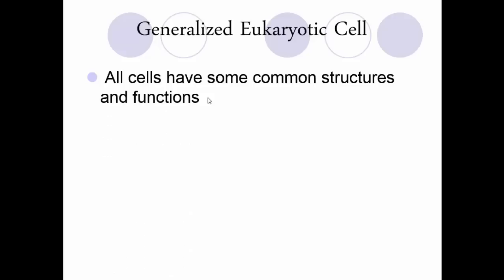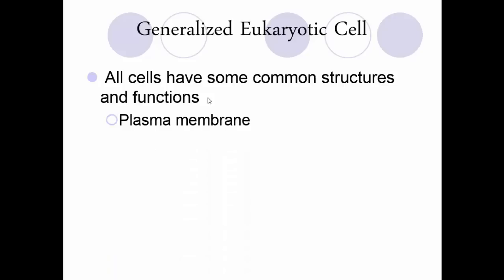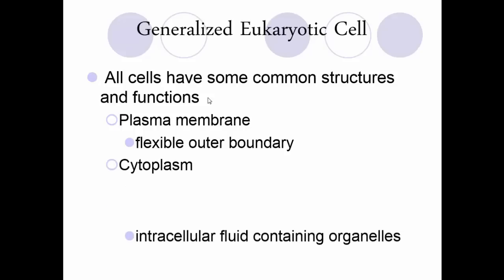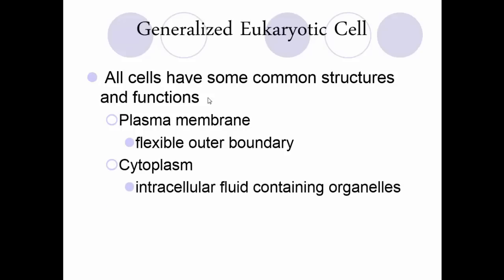When talking about the eukaryotic cell, some general structures and functions are shared by all cells. The plasma membrane is your outer boundary — a fluid mosaic that moves around and is made of different parts. The cytoplasm is the intracellular fluid that contains the organelles, surrounded by the plasma membrane, which allows nutrients and waste in and out as needed. The nucleus is the control center in the eukaryotic cell, containing the DNA, which is the boss of the cell.